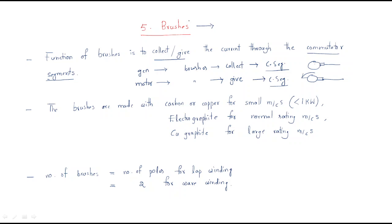The brushes are arranged so that we collect current — brush one and brush two. Brushes are made with carbon or copper. Copper is a conductor, so it is very easy to collect current, but it is used only for small machines less than one kilowatt.